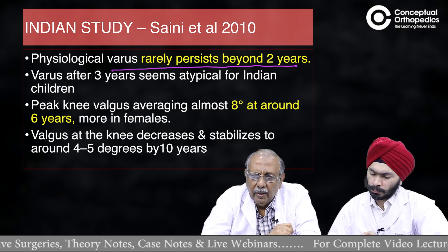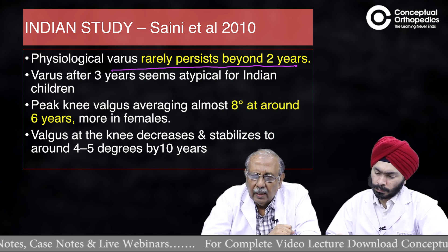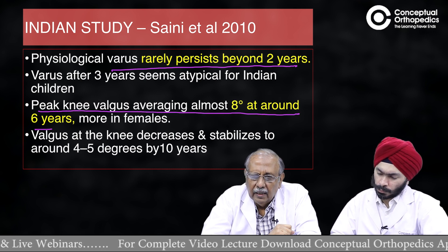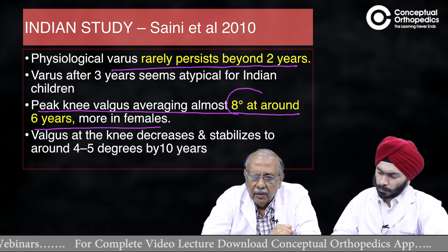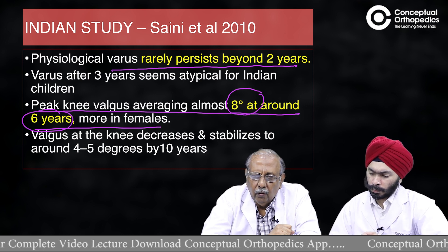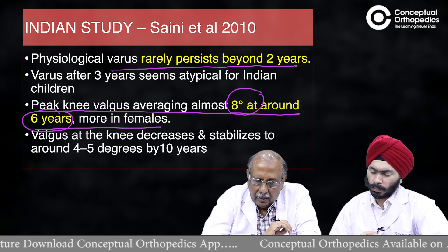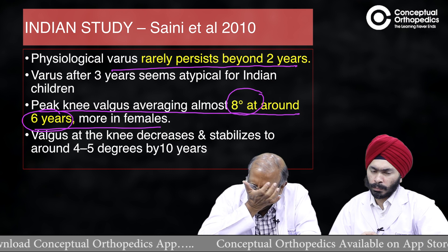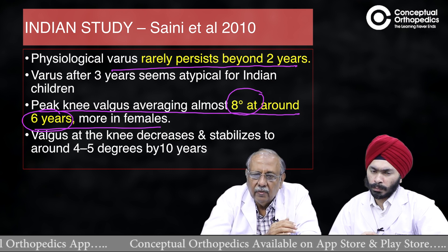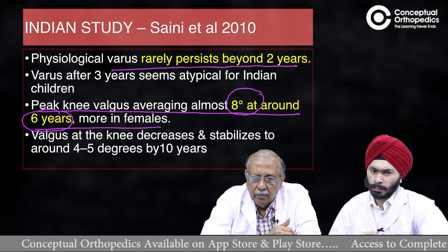A study from Vellore by Virashram Adam shows that in almost all cases, physiological varus disappears by two years, and varus after three years is atypical for Indian children. Peak knee valgus averaging around eight degrees is seen at six years and is more common in females. Valgus decreases and stabilizes to around four to five degrees by ten years of age. Compared to other populations, Indian children show persistence of valgus to a slightly older age, normalizing by around eight to ten years.